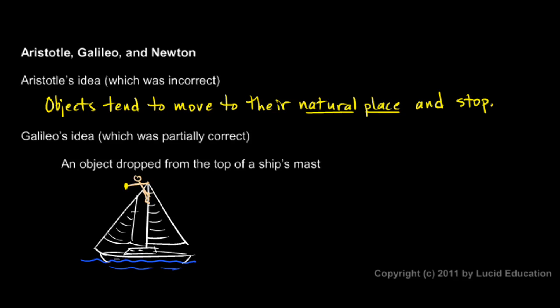And you hold an object out right there, and you let it go. Well, if you're holding the object over, say, this spot on the boat, when you drop it, it's going to fall down and hit that spot on the boat. In other words, the forward motion of the boat is imparted to the object as well. So the boat's moving forward. When you release the object, the boat doesn't move out from under the object, causing the object to land back here.